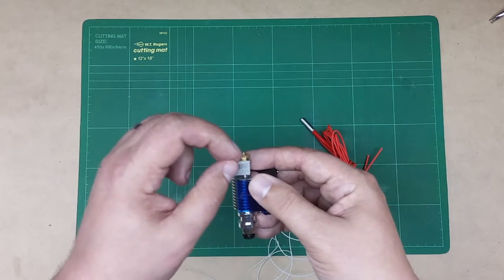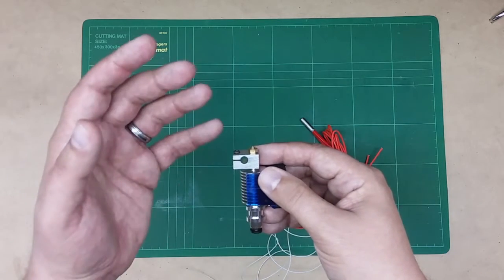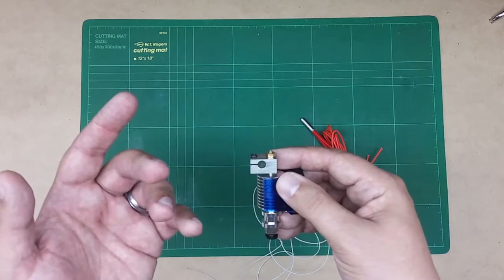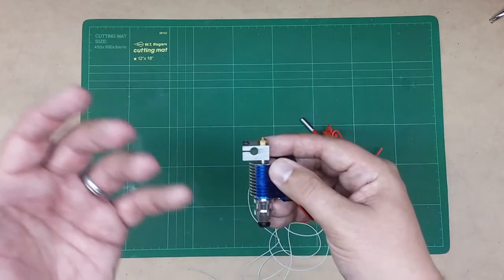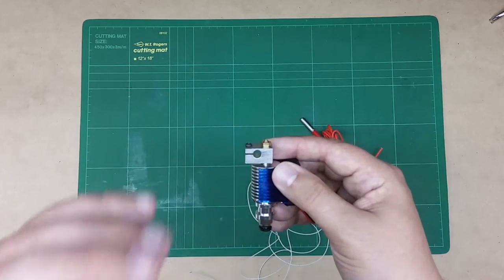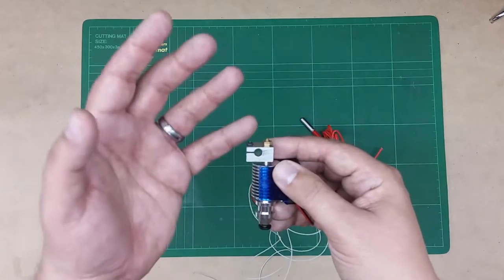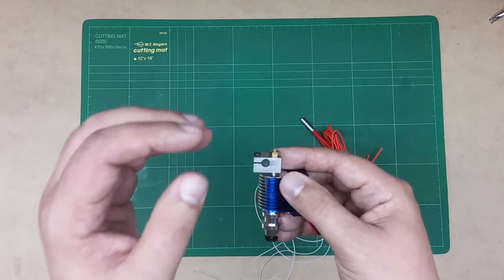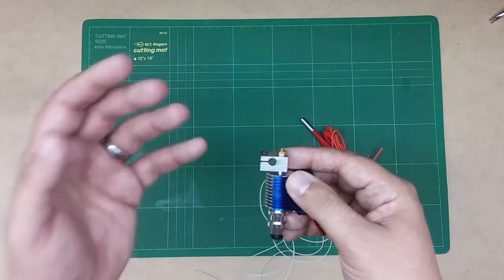So you want to have good control of the temperature and you want to have the temperature where it's at the right melting point. Now in a past episode I did a temperature tower, kind of showed you guys how to find the right temperature for a particular filament and that's very important. Now we want to try to maintain that because if we maintain a unified temperature of this heat block and nozzle we're going to get better prints. So how do we do that?